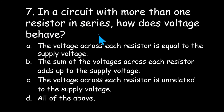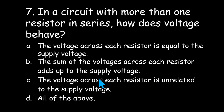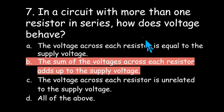Number seven: in a circuit with more than one resistor in series, how does voltage behave? The voltage across each resistor is equal to the supply voltage, the sum of the voltages across each resistor adds up to the supply voltage, or the voltage across each resistor is unrelated to the supply voltage. In a series circuit, the sum of the voltages across each resistor adds up to the supply voltage.